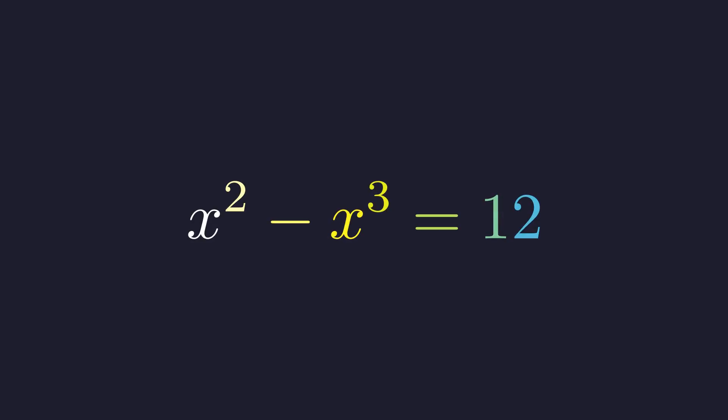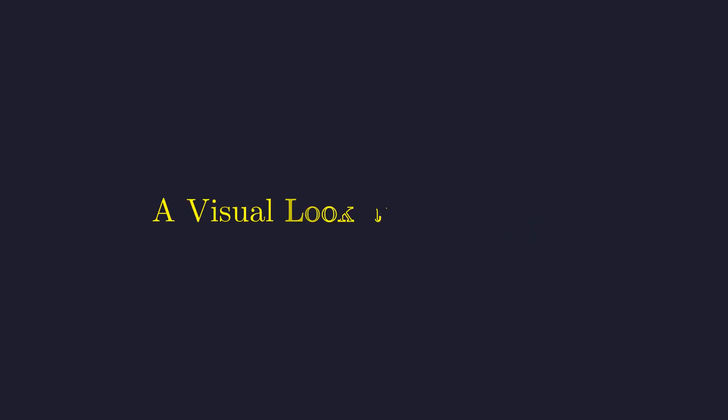We are asked to solve for x in this cubic equation. Before we begin the algebra, let's take a look at the problem visually. We can plot each side of the equation as a separate function: the curve y equals x squared minus x cubed, and the line y equals 12.